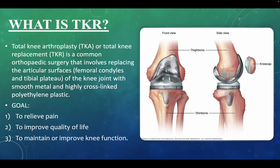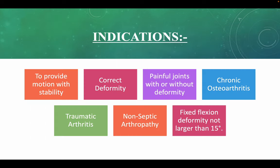TKR is a common orthopedic surgery that involves replacing the articular surfaces — the femoral condyle and tibial plateau — with smooth metal and highly cross-linked polyethylene plastic. The goals are: to relieve pain, to improve the quality of life of the patient, and to maintain or improve knee function. Indications include: providing motion with stability, correcting deformity, painful joints with or without deformity, chronic osteoarthritis, traumatic arthritis, non-septic arthropathy, and fixed flexion deformity not larger than 15 degrees.